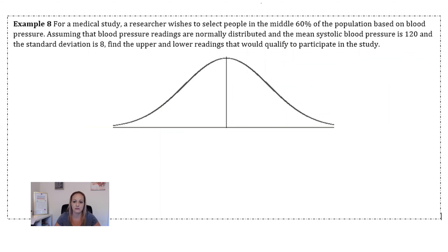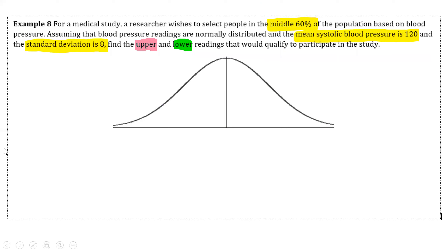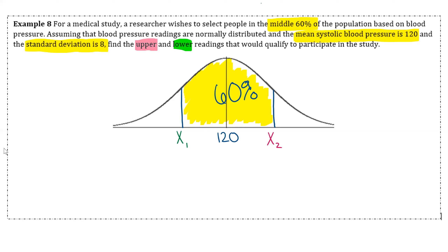For a medical study, a researcher wishes to select people in the middle 60 percent of the population based on blood pressure. Blood pressure readings are normally distributed with a mean systolic blood pressure of 120 and a standard deviation of 8. Find the upper and lower readings that qualify. We label 120 in the middle of the curve and shade the middle 60 percent. We're looking for two x values — a lower bound and an upper bound.